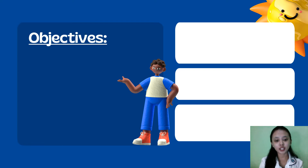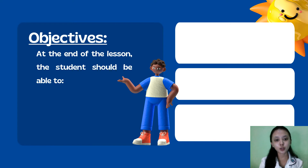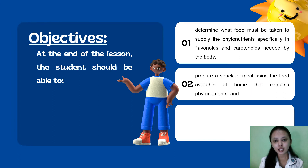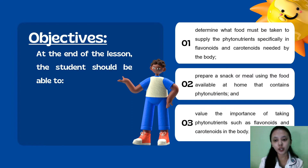Now we are going to start our discussion. Here are the objectives. At the end of the lesson, the student should be able to: number one, determine what food must be taken to supply the phytonutrients, specifically flavonoids and carotenoids, needed by the body; next, prepare a snack or meal using food available at home that contains phytonutrients; and number three, value the importance of taking phytonutrients such as flavonoids and carotenoids in the body.